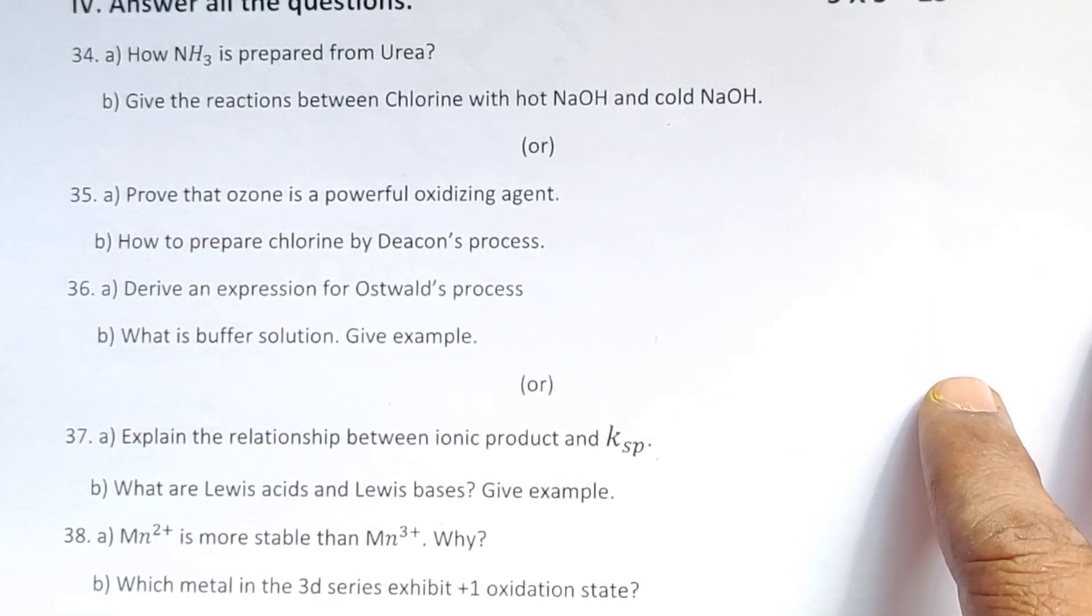Thirty-seven. Explain the relationship between ionic product and Ksp. What are Lewis acids and Lewis bases? Give example.